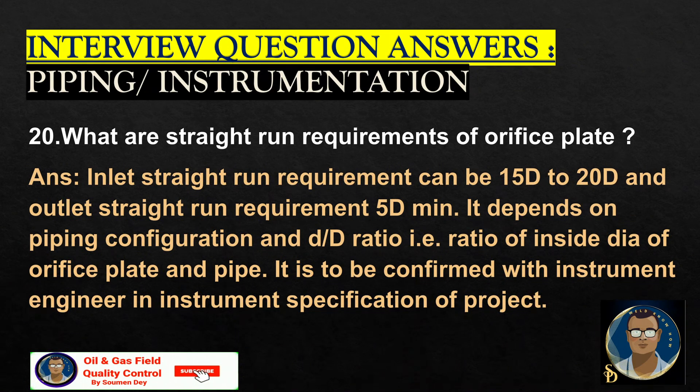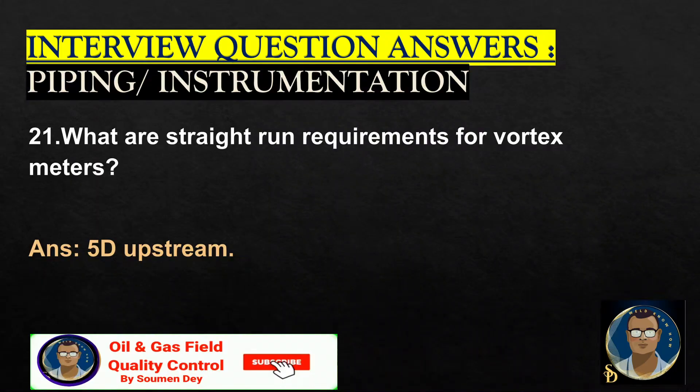What are the inlet and outlet straight run requirements of an orifice plate? The inlet straight run requirement can be 15D to 20D and the outlet straight run requirement is 5D minimum. It depends on the piping configuration and the D-to-d ratio — that is, the ratio of the inside diameter of the orifice plate to the inside diameter of the pipe. This should be confirmed with the instrument engineer in the instrument specification sheet (ISS) for the project.